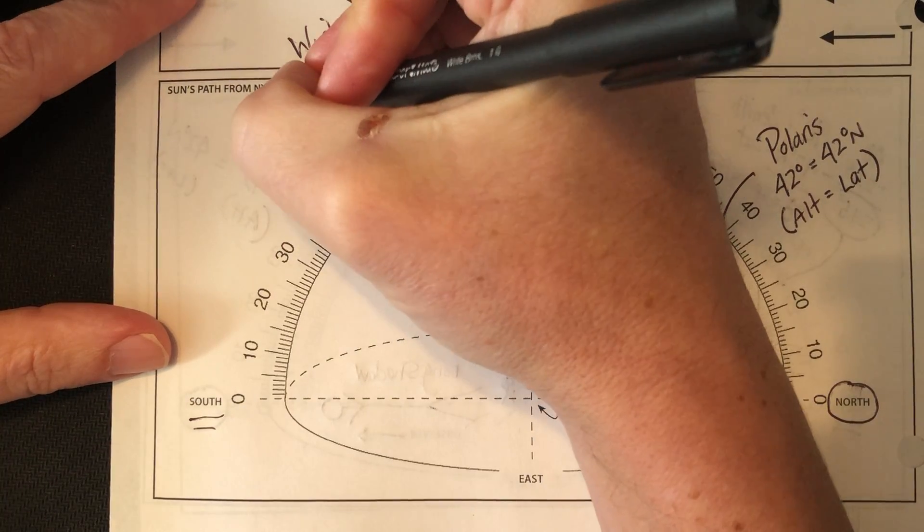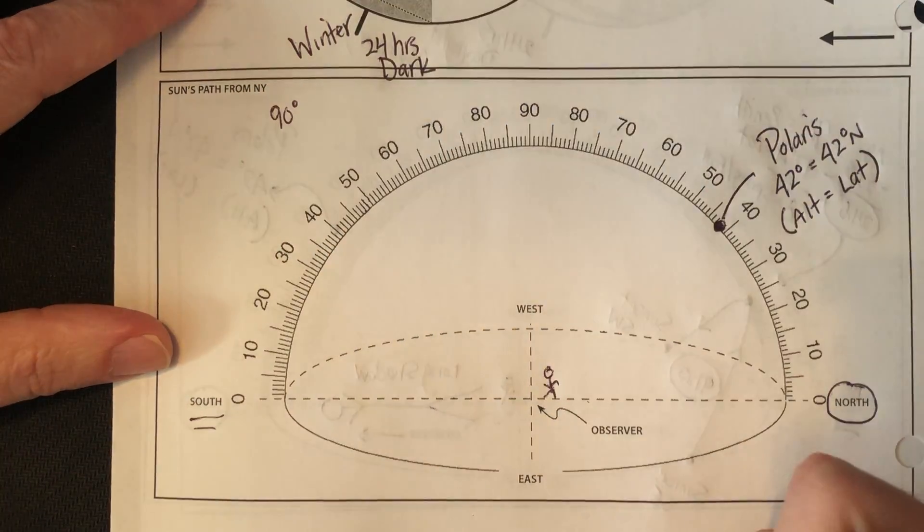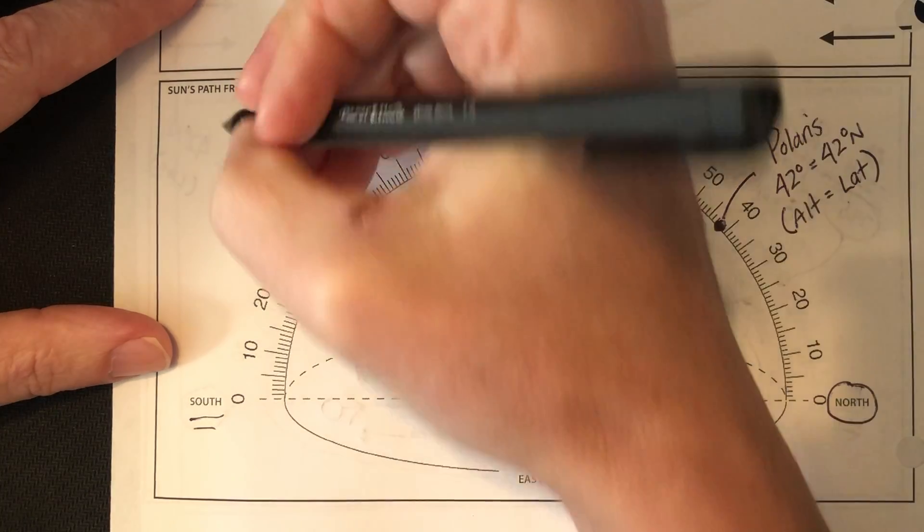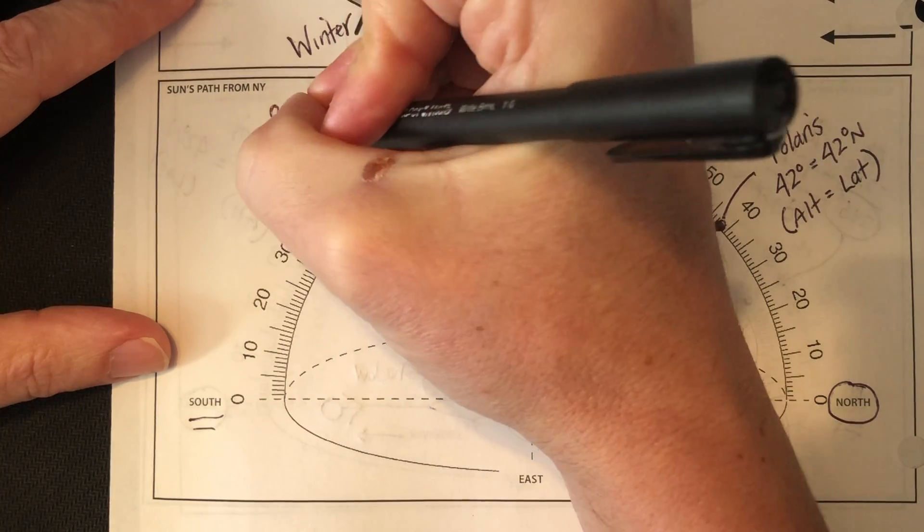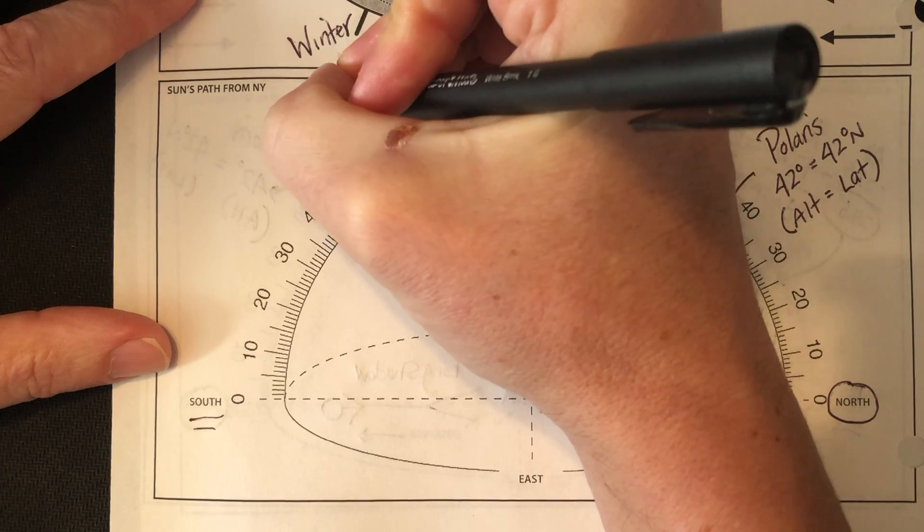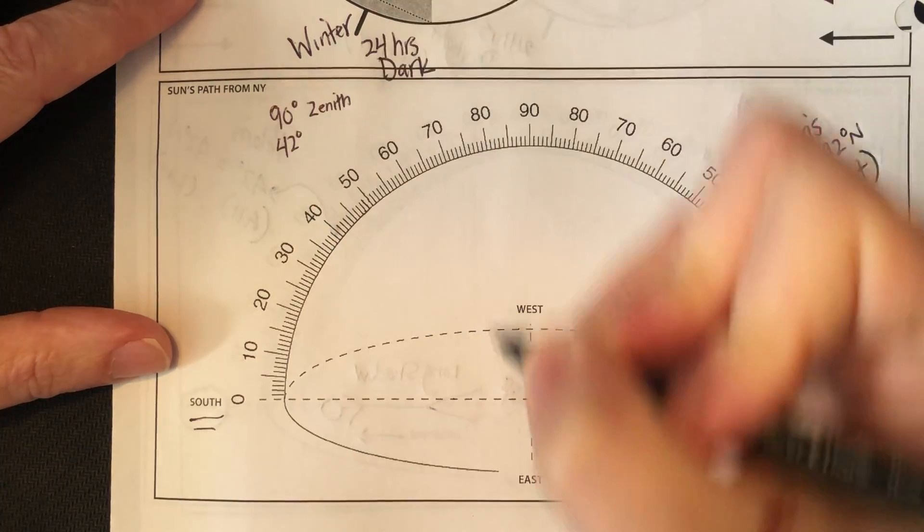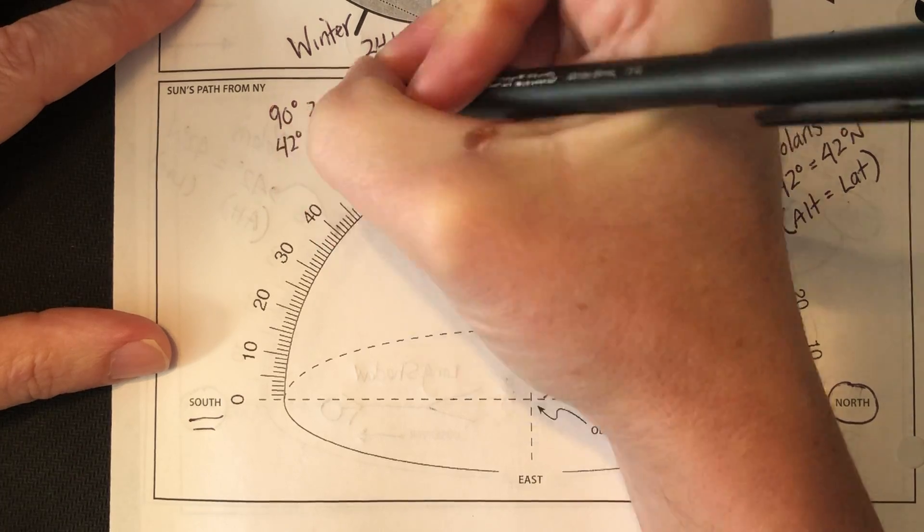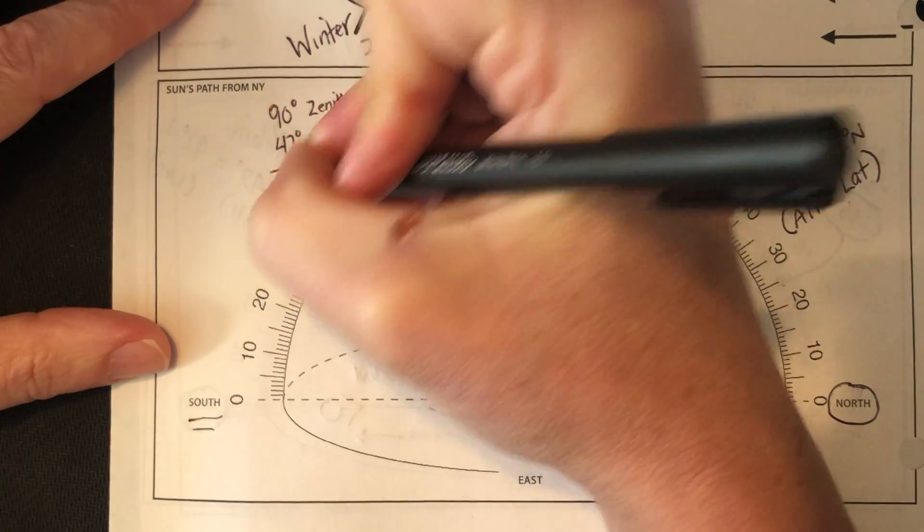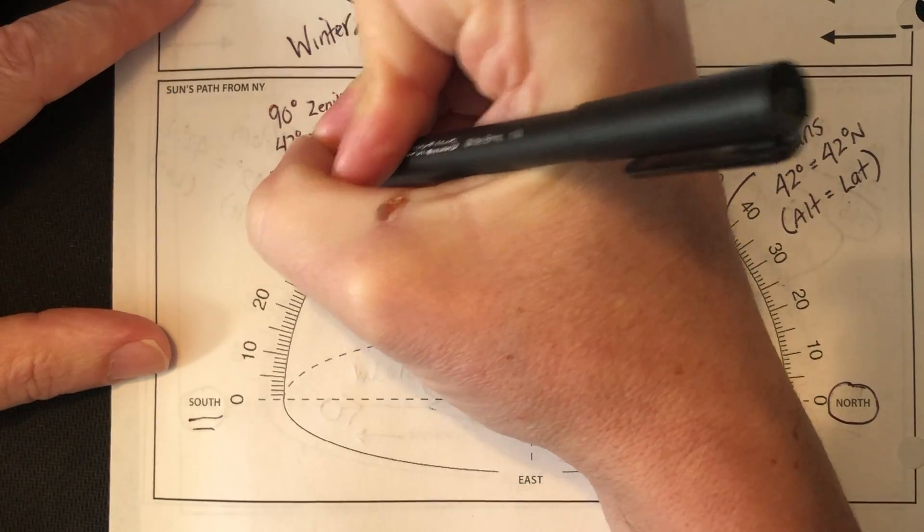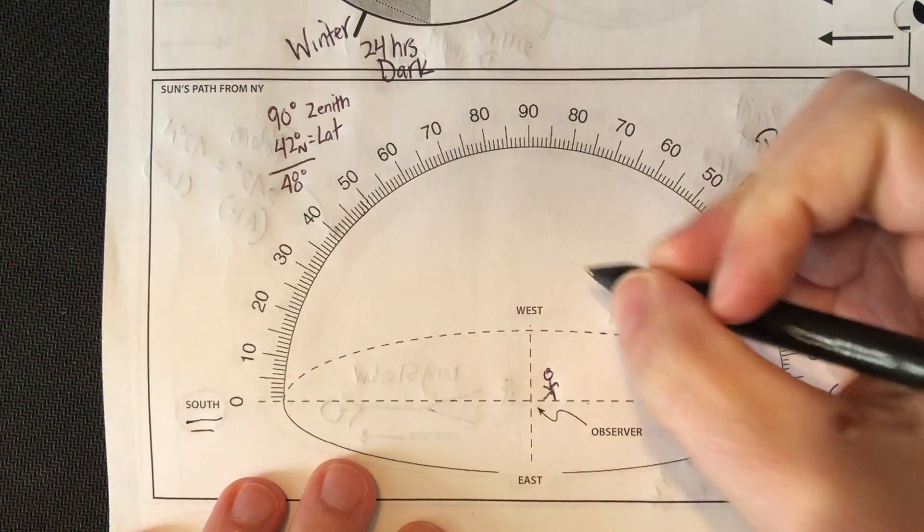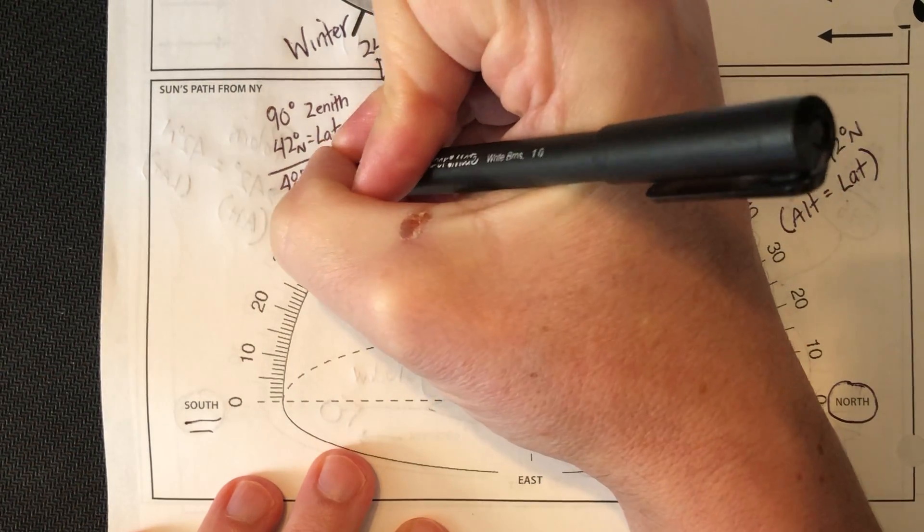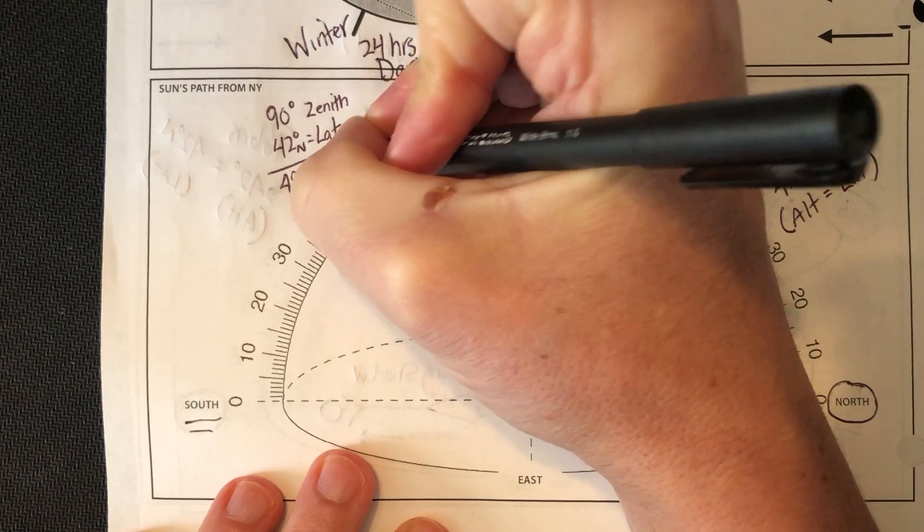The zenith is 90 degrees. Our latitude is 42. So that's the zenith, it's the highest the sun can get in the sky. 42 is our latitude. If you subtract them, you get 48 degrees. Now, that's going to be for spring and fall.